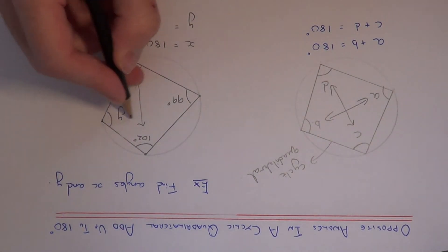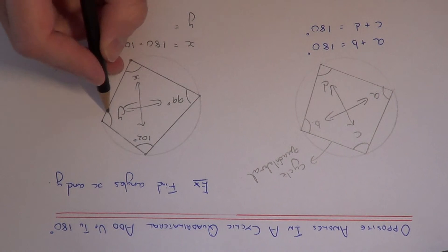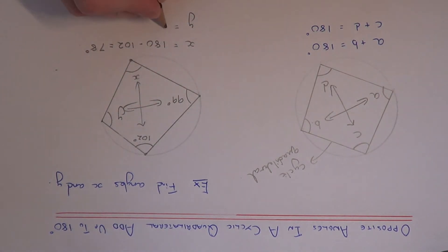And to get Y then we know that these two angles here add up to 180. So again subtract the 99 from 180. So that will give us 81 degrees.